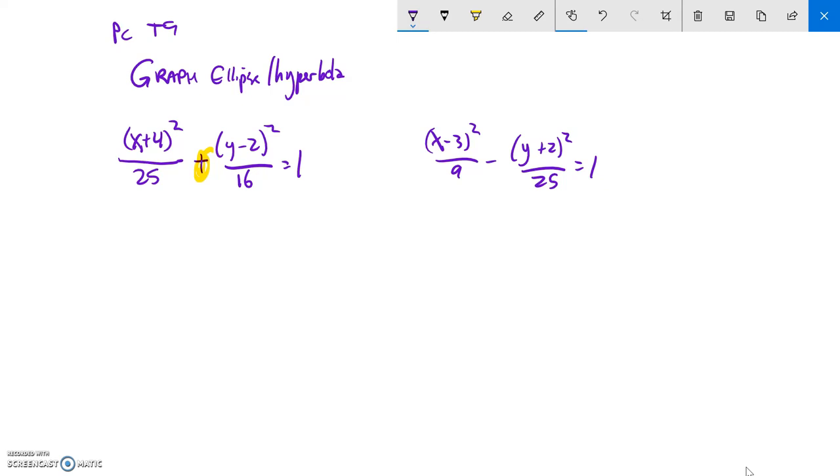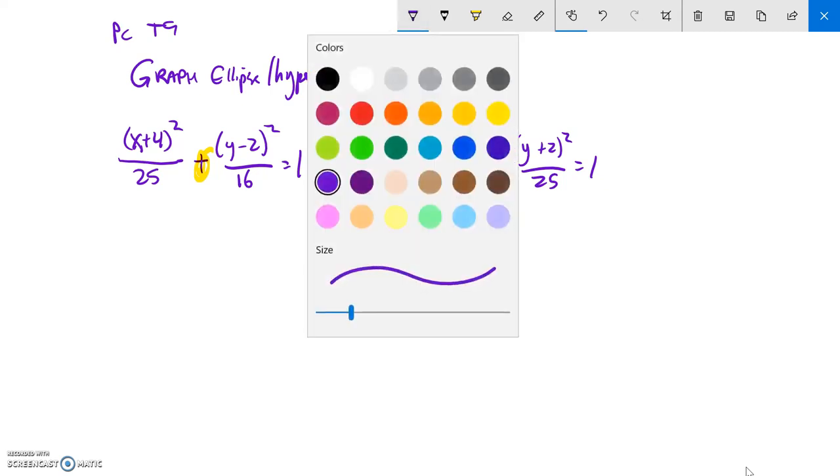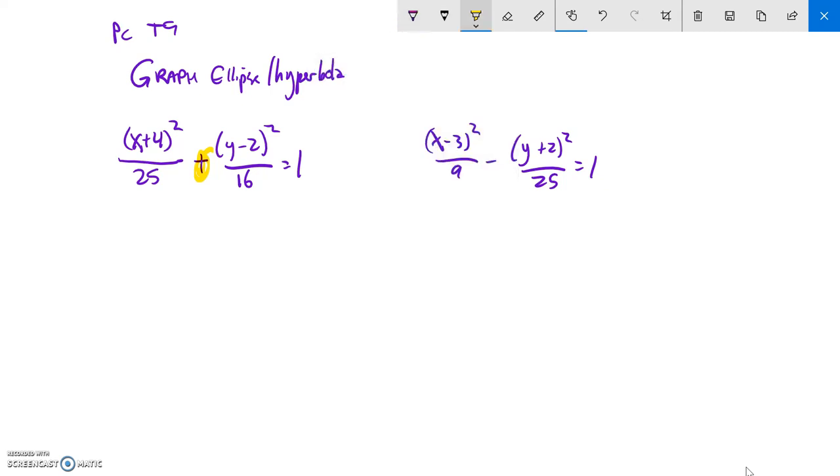Let me start with what I do know. I know that the center is at negative 4, positive 2, and I'm just thinking about what to plug in to make this zero and make this zero. So my center is at the point negative 4, positive 2.